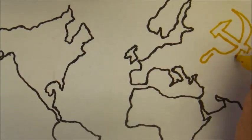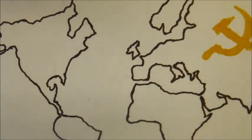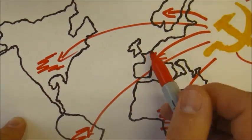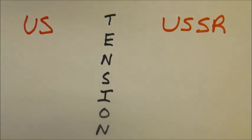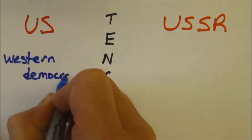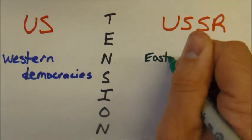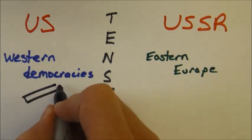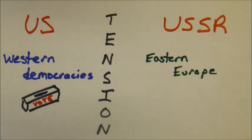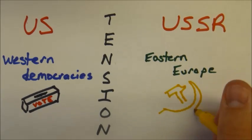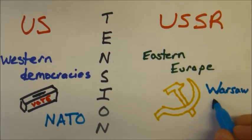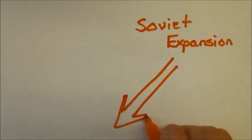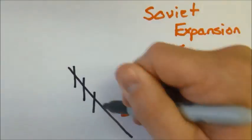The United States feared this. The tension between the two powers, as the Soviets tried to spread communism throughout the world, became known as the Cold War. This tension created what was an iron curtain — the U.S. and the Western democracies versus the USSR and Eastern Europe. Western democracies were represented by NATO, and the USSR and Eastern Europe by the Warsaw Pact. The Soviet expansion had to be met with U.S. containment.